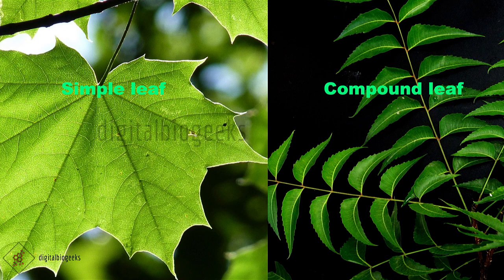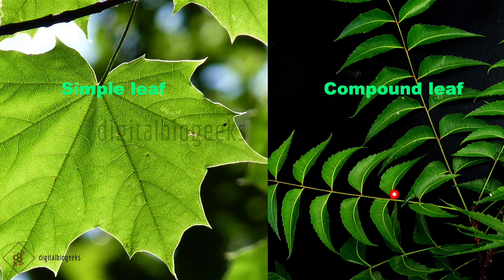When there is only a single blade present on the petiole, that is known as a simple leaf — meaning incisions on the lamina will not touch the midrib. When the blade of the leaf has two or more subunits, the leaf is called a compound leaf. The incisions made on the lamina reach up to the midrib, breaking it into many small subunits called leaflets.